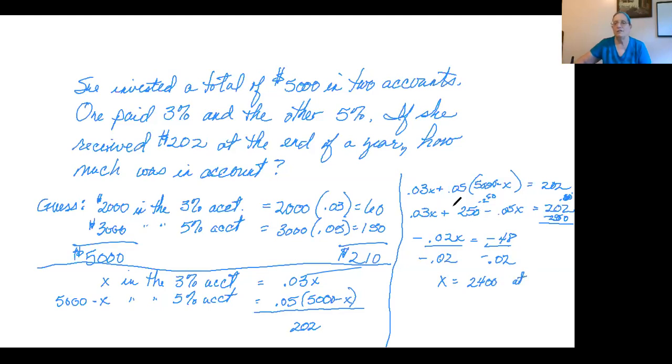That represents the amount at 3%. And since the amount in the other account is 5,000 minus X, 5,000 minus 2,400 is 2,600.